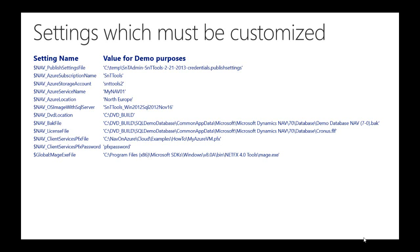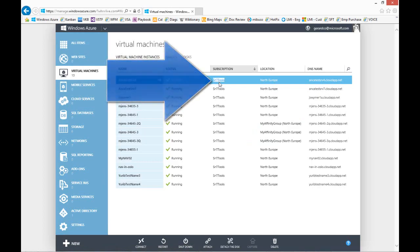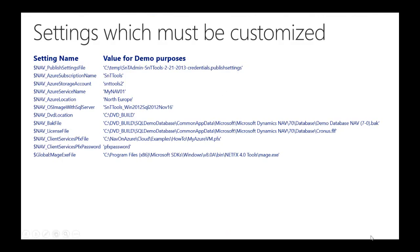The next setting is the NAV Azure subscription name. This is your Azure subscription name and can be seen on the Azure portal. The next setting is the Azure storage account, which should have been created earlier. For more details, see step 1 in my previous video, How Do I Get Started with Provisioning Tools for Azure.